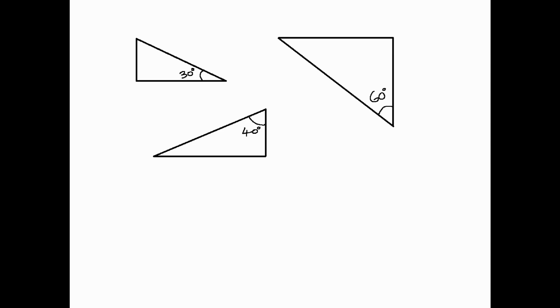We know how to work out the longer side of a right-angled triangle if we're given the other two sides using Pythagoras' theorem. When angles are involved, we need to use trigonometry.